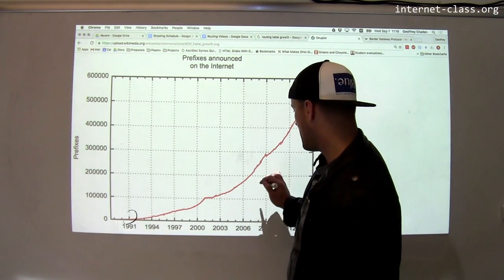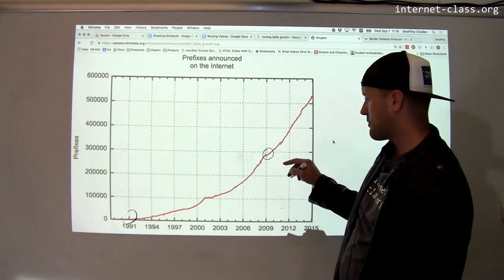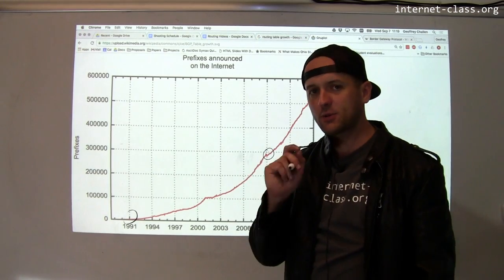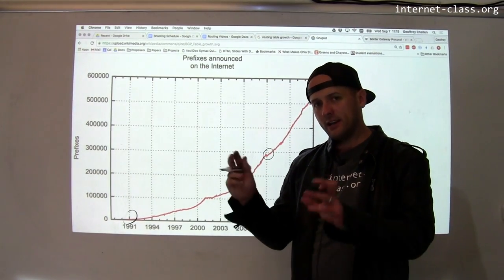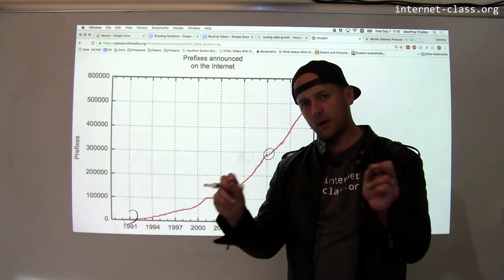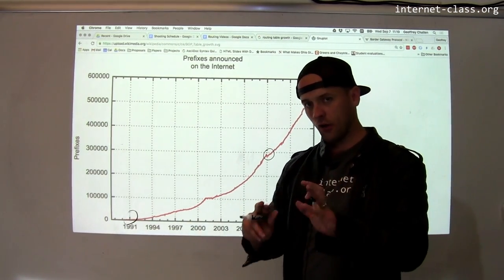So by 2009, routers had to route about 300,000 prefixes. Each one of these prefixes identifies an autonomous system and tells the router how to make this particular decision. It identifies a part of the IP address that the router uses to decide link one or link two, over and over again.